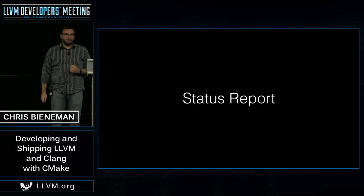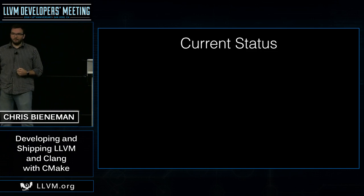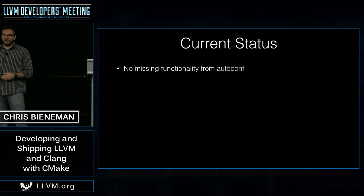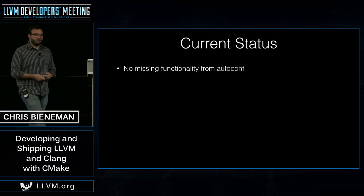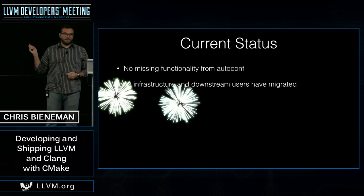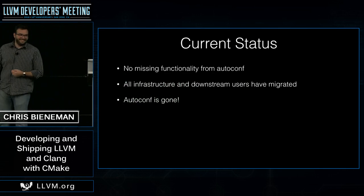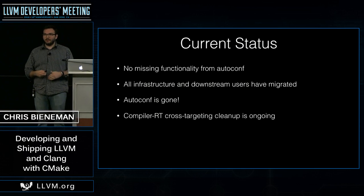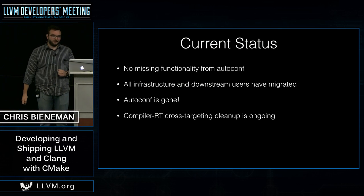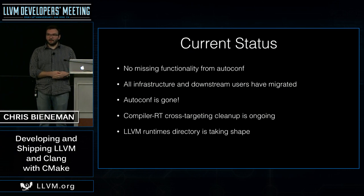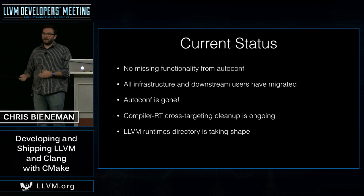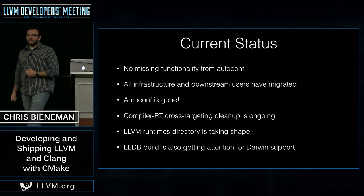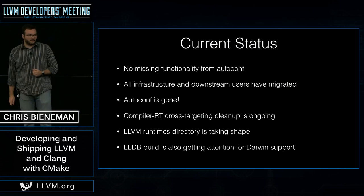Let's talk about the status of the current build system. We're currently not tracking any features from AutoConf that are missing in CMake, and we're not tracking any downstream users who haven't migrated or had problems. AutoConf is gone. There's also ongoing work to clean up CompilerRT, particularly looking at support for cross-targeting different architectures. We have a new runtimes subdirectory in the LLVM project designed to help building runtime libraries for your targets, and that is beginning to take shape. The LLDB build system has also been getting support for Darwin.